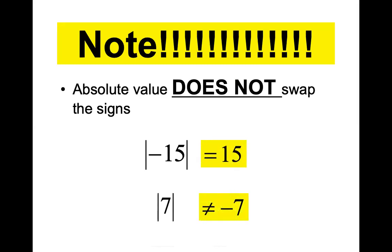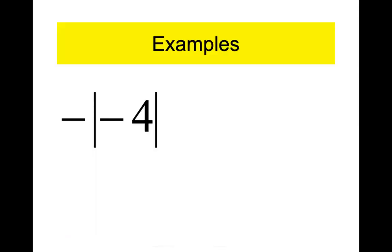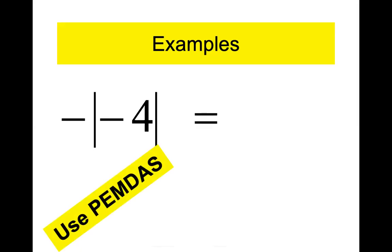It doesn't mean that absolute value changes the signs — that's opposites. Opposites change the sign: positive becomes negative, negative becomes positive. Absolute value does not swap signs. The answer is seven, which leads you to believe the answer can never be negative — and that's true. But be careful: if there's a negative sign outside the absolute value bars, it's saying subtract the absolute value of whatever is inside. Be careful on those.